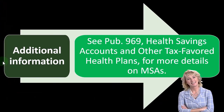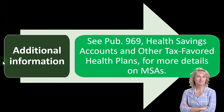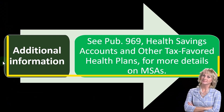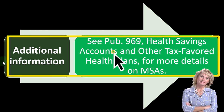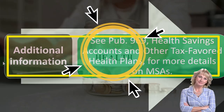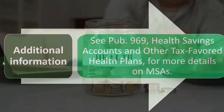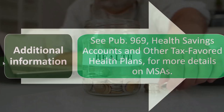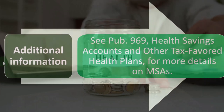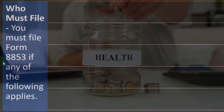We're focused on the Archer here. For additional information, you can see Publication 969, Health Savings Accounts — that's the other big one that comes up more often these days than the Archer — and other tax-favored health plans for more details on MSAs.